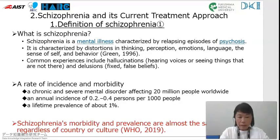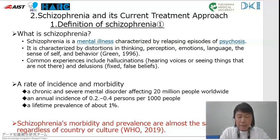What is schizophrenia? Schizophrenia is a mental illness characterized by relapsing episodes of psychosis. It is characterized by distortions in thinking, perception, emotions, language, the sense of self, and behavior.